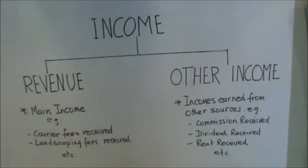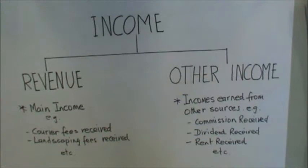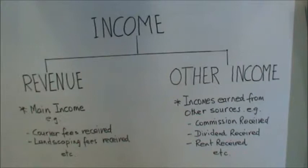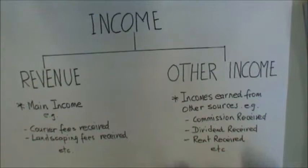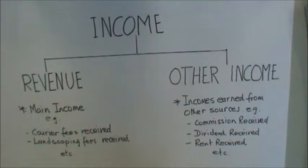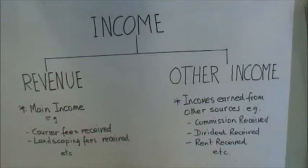Sometimes, especially if the business has surplus cash, it buys shares in other businesses, and it would then receive dividends, which would be reported as other income — because that's not income from the main operations, it's side income. They may also have sublet part of their office and received rent. Again, it's income the business is earning, but not from the main operation, so it is reported under other income.